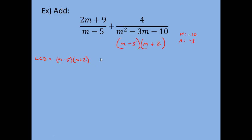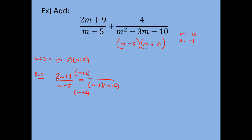Now we rewrite each fraction with the LCD as the new denominator. I rewrite (2m + 9) over (m − 5) as something over (m − 5)(m + 2). What did I multiply (m − 5) by to get the new denominator? I multiplied by (m + 2), so I must also multiply the numerator by (m + 2). Foiling (2m + 9)(m + 2): 2m·m = 2m², 2m·2 = 4m, 9·m = 9m, 9·2 = 18. So the numerator becomes 2m² + 4m + 9m + 18.